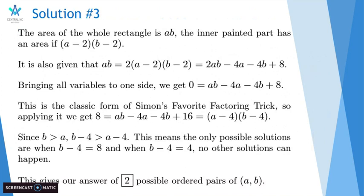Since b is greater than a, that means b minus 4 is also greater than a minus 4. This means the only possible solutions are when b minus 4 equals 8, and when b minus 4 equals 4. No other solutions can happen. This gives our answer of two possible ordered pairs of (a, b).